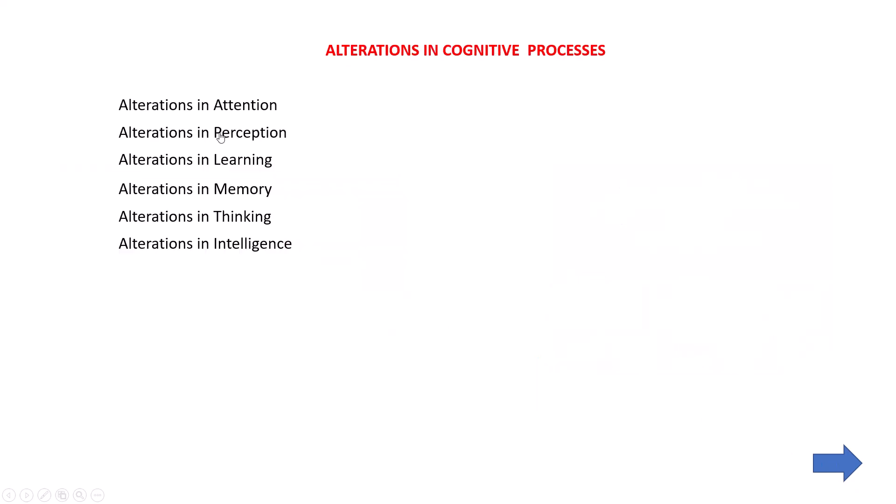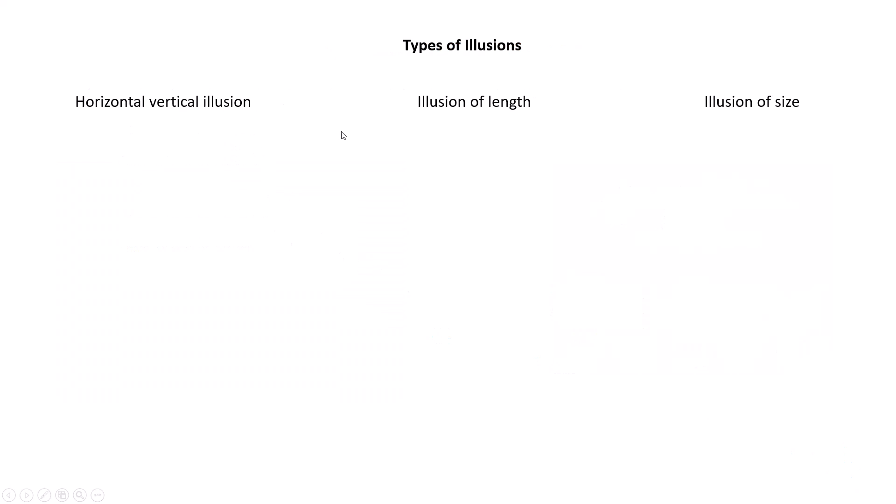Next we can see alteration in perception. The most common abnormal perceptions are illusion and hallucination. Here we are going to see illusions — hallucinations are covered in another video. There are three types of illusions I want to explain.